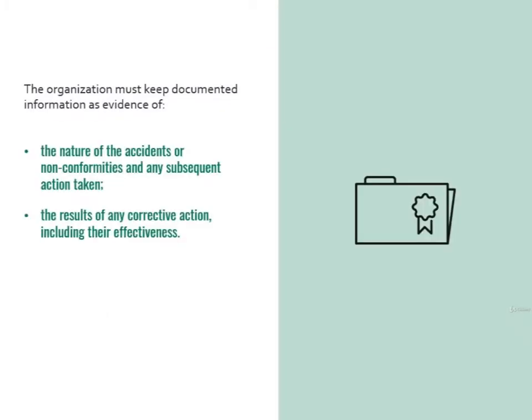As you may have already guessed, since this process is so relevant, it needs to be put into documented information. The organization must keep documented information as evidence of the nature of the accidents or nonconformities and any subsequent action taken, the results of any corrective action, and actions including their effectiveness. Think of it as a diary — it helps your company keep track of everything that goes wrong and therefore act accordingly.